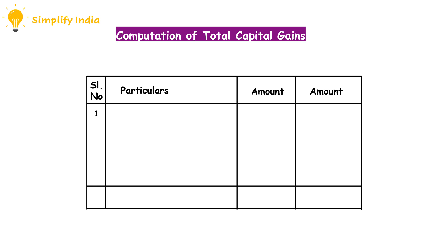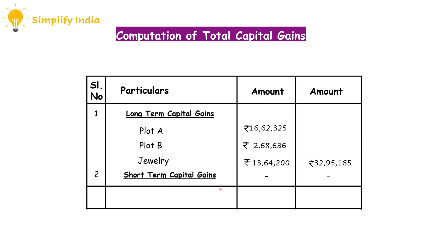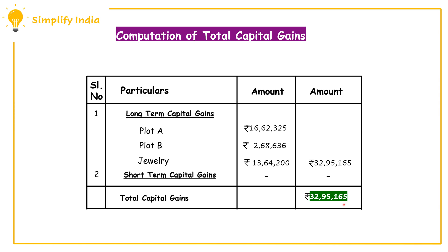Finally, we calculate the total capital gains of Mr. Rajesh Naidu. Long-term capital gains: from Plot A Rs. 16,62,325, from Plot B Rs. 2,68,636, and from jewellery Rs. 13,64,200. Total long-term capital gains: Rs. 32,95,165. Mr. Rajesh Naidu does not have any short-term capital assets, so short-term capital gains are nil. Total capital gain for the assessment year 2020-21 is Rs. 32,95,165.